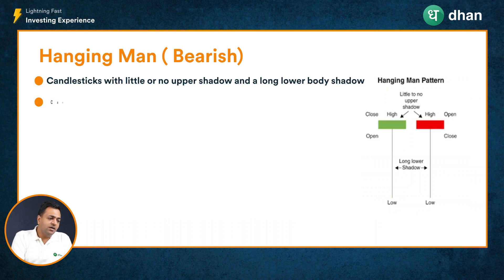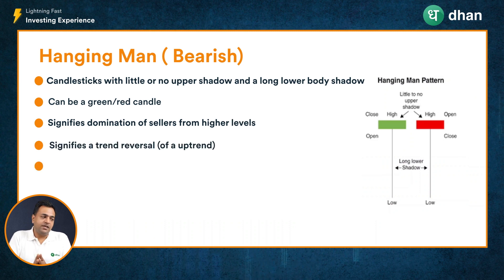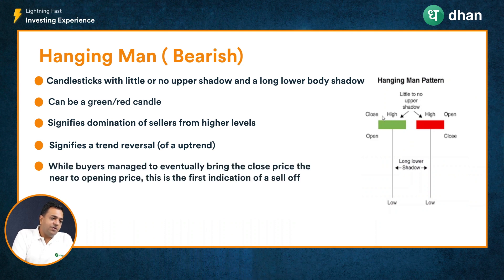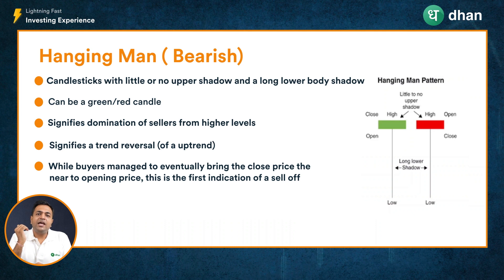The color of the body of the candle is not of significance here. What is of importance is the psychology behind this candle. This candle signifies that the sellers were able to dominate the market and tried to take the price down, but the buyers somehow came in and managed to hold the prices. This is the first sign that buyers are trying to take control in a stock where the price is already in an uptrend.